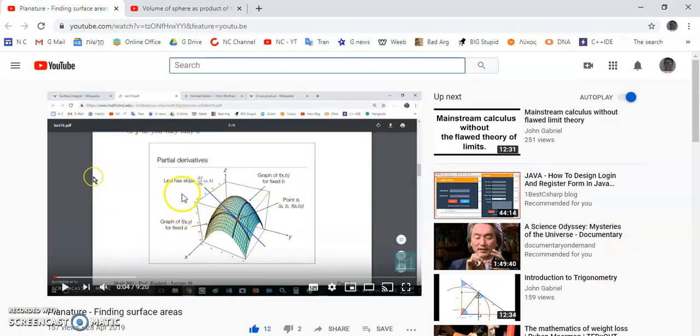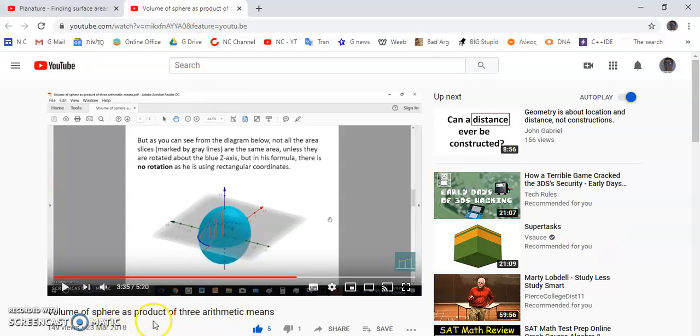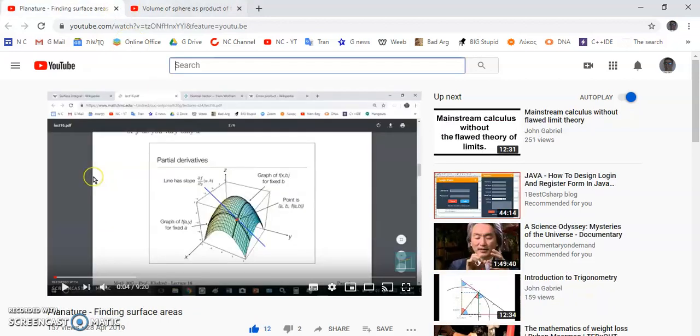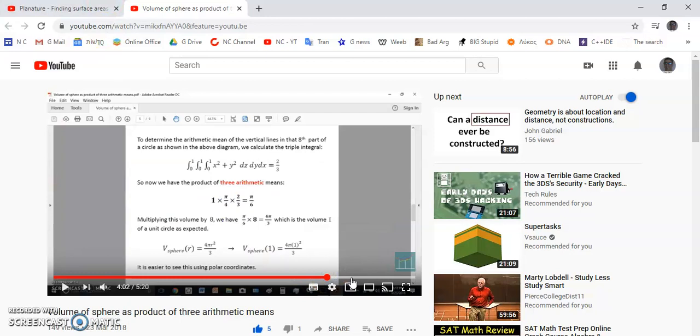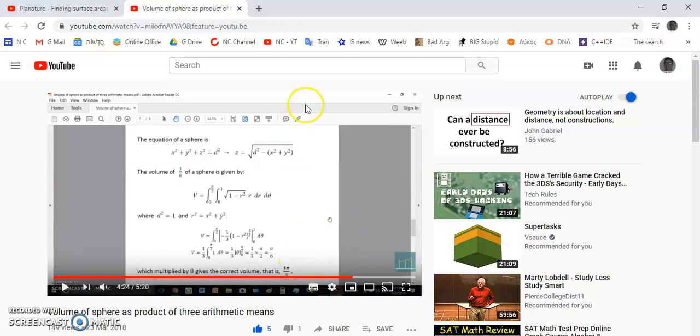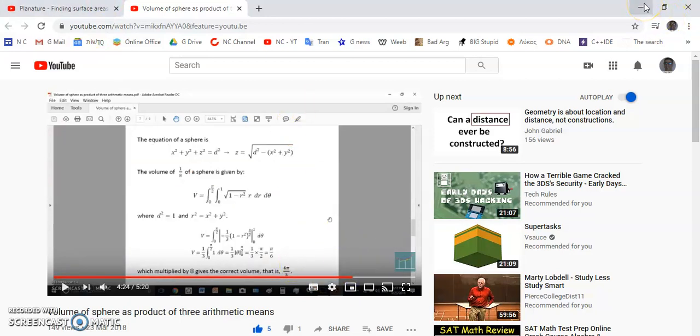So if you look at two of my videos here, these are quite advanced topics but this one here is called planetary finding surface areas and also volume of a sphere as a product of three arithmetic means. So this you can also define volume generally as a product of arithmetic means. So be sure to watch these two videos especially if you've taken a course in calculus and you'll see how all these things here fit beautifully into place.